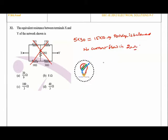We can remove the 20-ohm resistor and redraw the network. We have 5 and 15 on one side, 10 and 30 on the other. This simplifies to 15+5 = 20 ohms and 10+30 = 40 ohms in parallel.